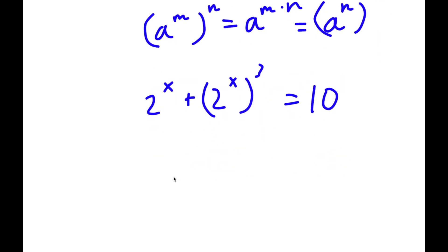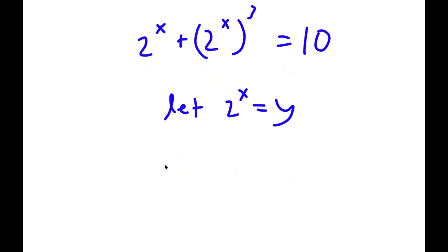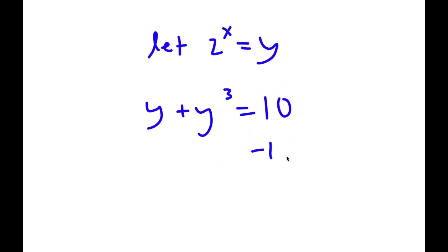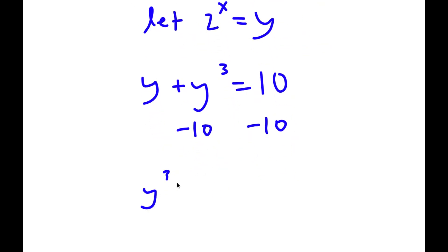Now I'm going to let 2 to the power of x equal y. So now I have y plus y to the power of 3 is equal to 10. If I subtract 10 on both sides, I get y cubed plus y minus 10 is equal to 0.